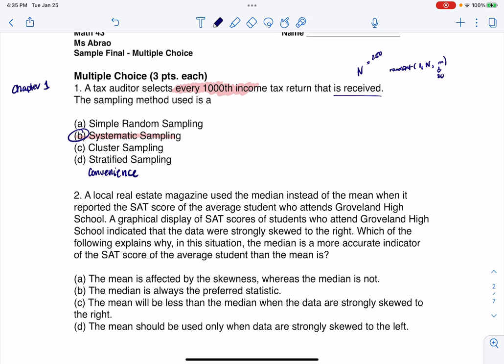We did systematic. Clustering would be if he grouped all of these tax returns. Maybe he did them by state. Let's say he grouped all the California returns and all the Texas returns and all the Florida returns. I don't know where he or she are getting all these returns, but you know what I'm trying to say. If he then took at random one chunk, so maybe he took all of the California returns, that would be clustering.